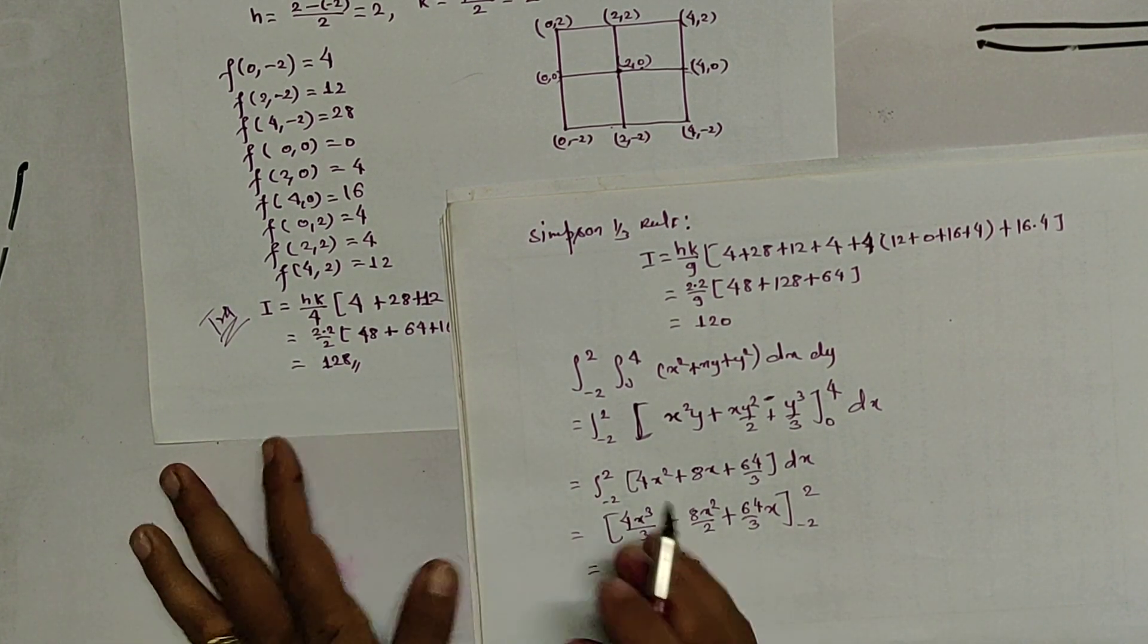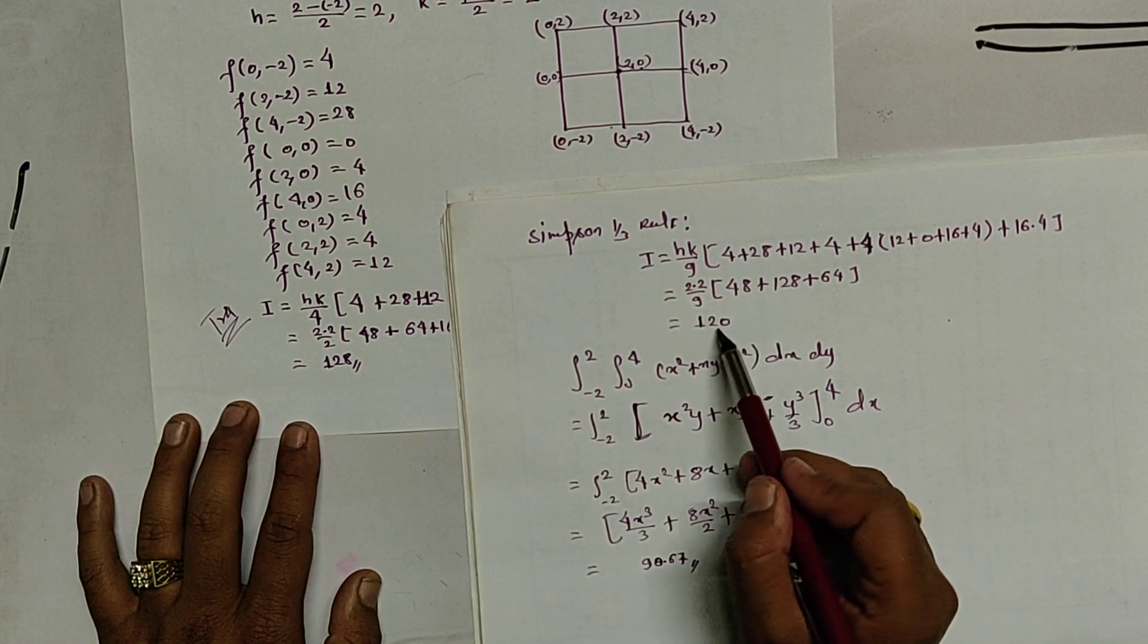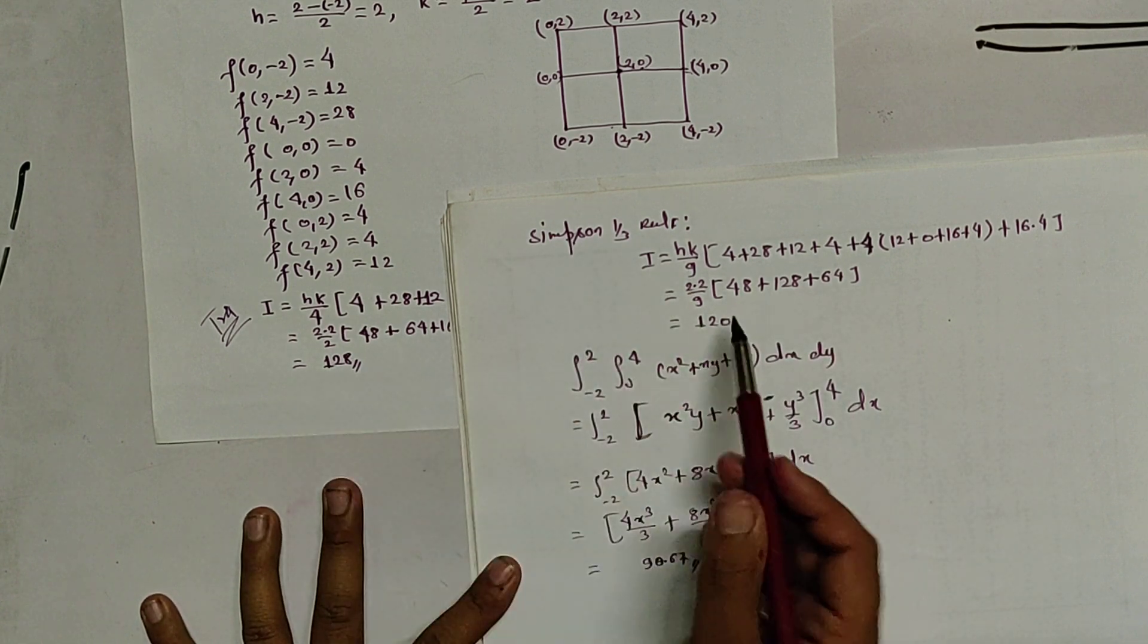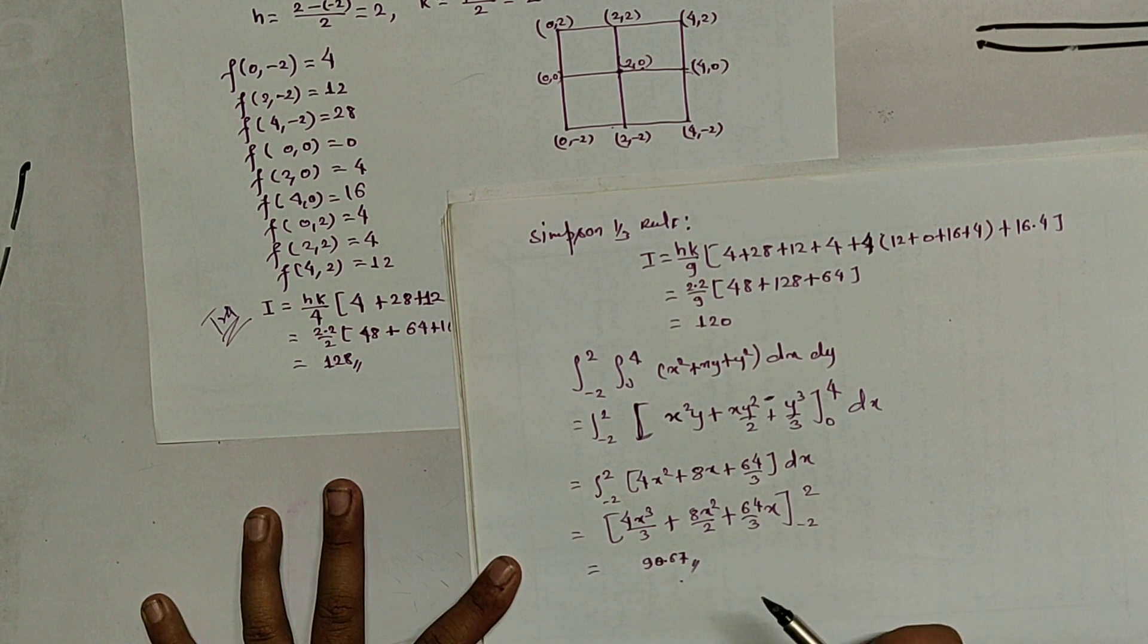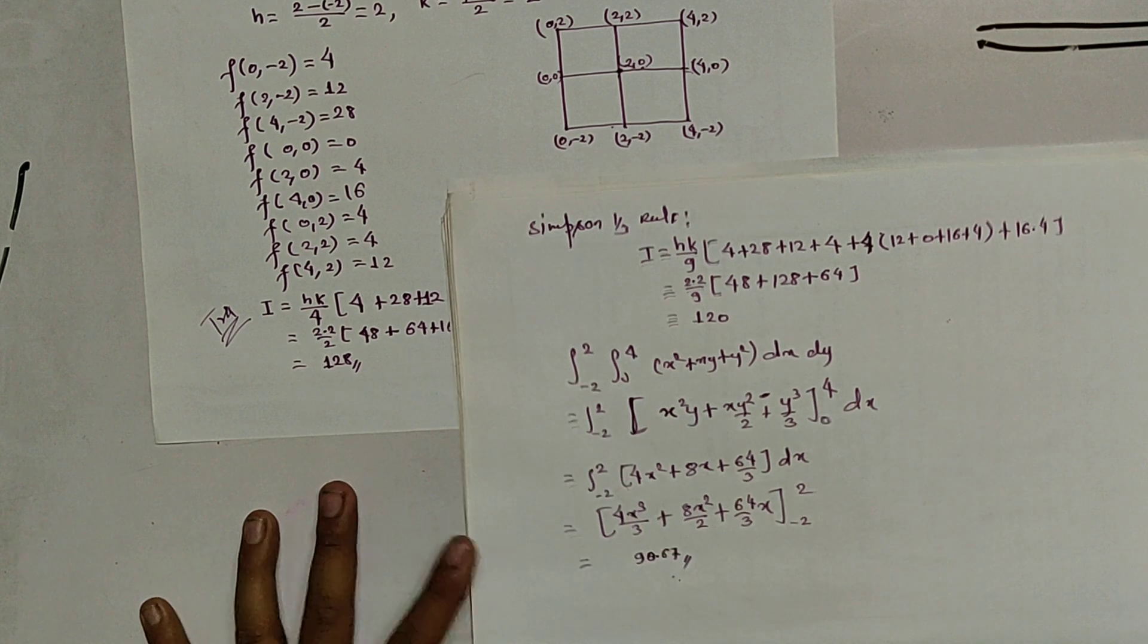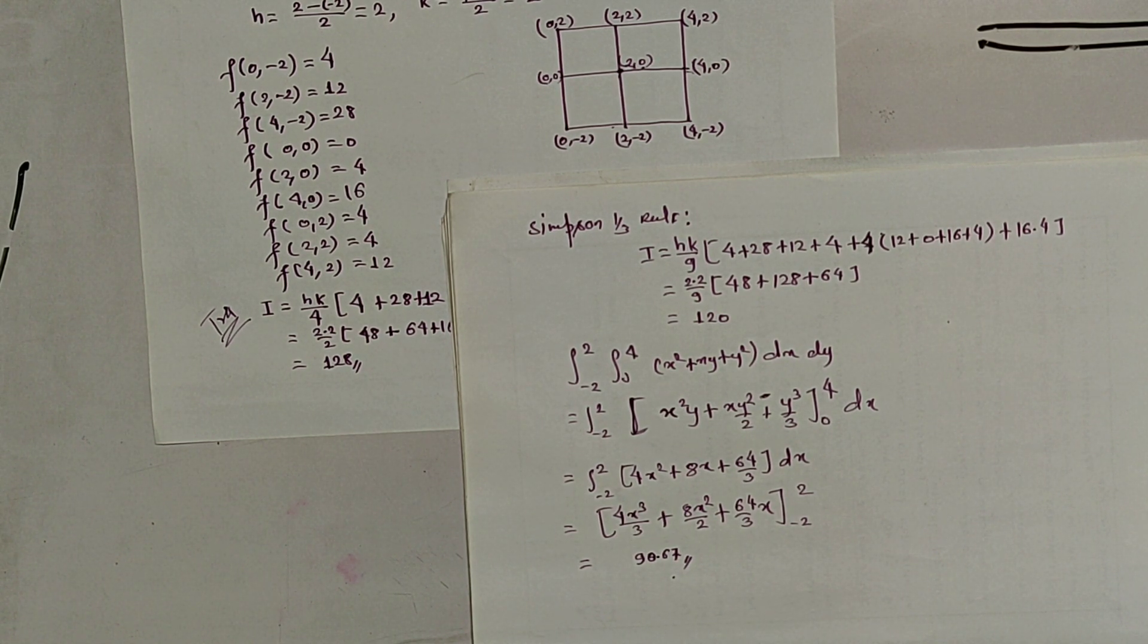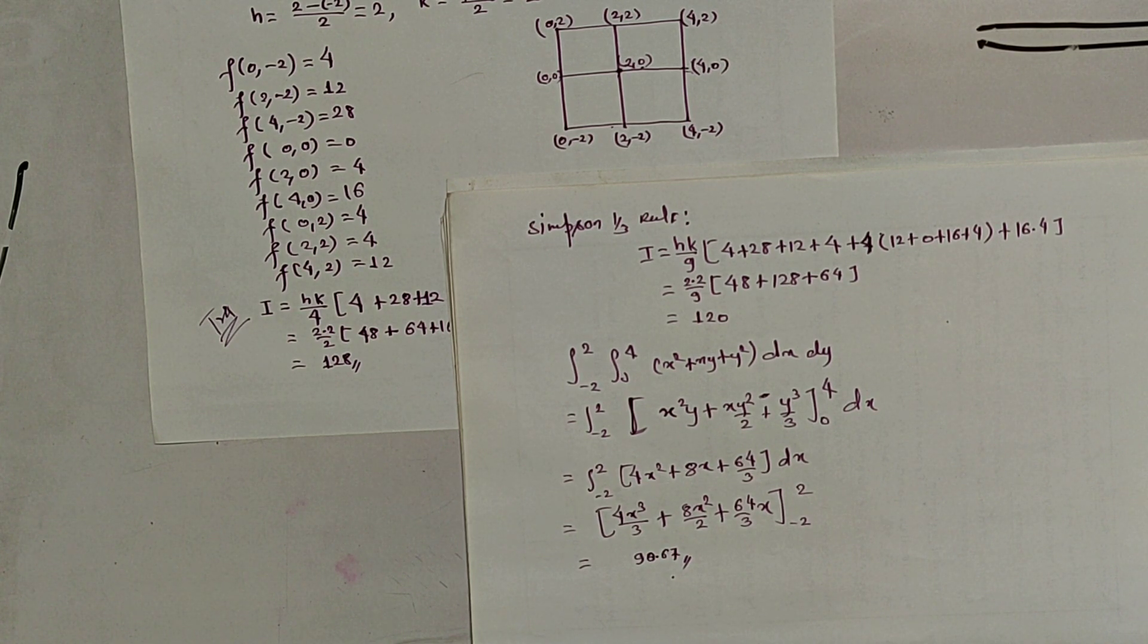So, by trapezoidal method, it was 128 and by Simpson 1 by 3 rule, it is 120. So, Simpson 1 by 3 seems better, it is nearer to the exact value. Simpson 1 by 3 rule is better and more accurate than trapezoidal rule. In next video, we will be starting Gaussian quadrature integration and we will be deriving its formula and solving its example. Thank you and bye-bye.